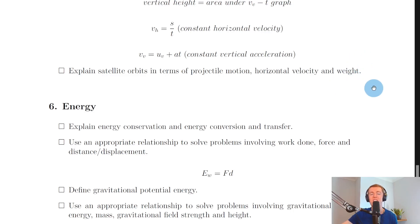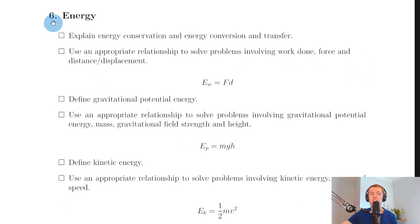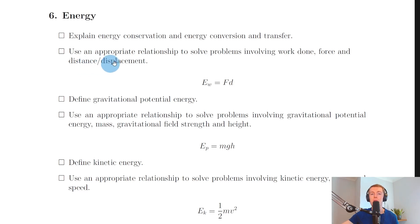Lastly for section six — energy. You need to explain energy conservation and energy conversion and transfer. The law of conservation of energy says energy cannot be created or destroyed; it can only be changed from one form into another. The main types covered here are work done, gravitational potential energy and kinetic energy. You need to solve problems involving work done, force and distance: EW = Fd, where EW is work done, F is usually the unbalanced force, and d is the distance.